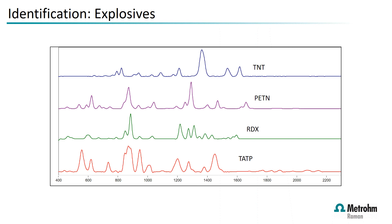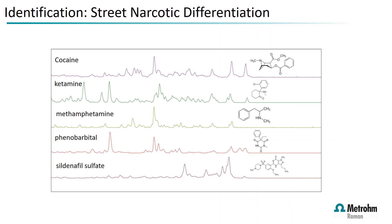For portable explosives testing, Raman has been used extensively — a wide selection of explosives can be identified, which is extremely useful for hazmat teams and portable counter-IED teams. Similarly, on the defense and security side, portable Raman systems are used extensively for street narcotics differentiation, with extremely clear differentiation between white powders and straightforward identification.